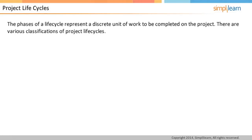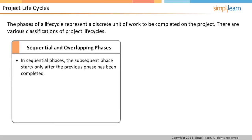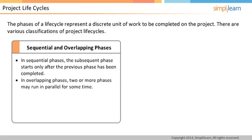A lifecycle is composed of phases. Each phase represents a discrete unit of work required to be done on the project. There are different ways of classifying project lifecycles. Let us first discuss sequential versus overlapping lifecycle. In sequential phases, the subsequent phase starts only after the previous phase has been completed, whereas in overlapping phases, two or more phases may run in parallel for some time. This could help fast-tracking and compressing the amount of time required.